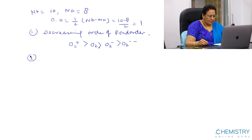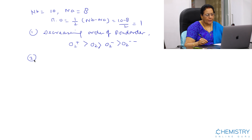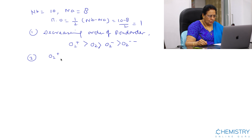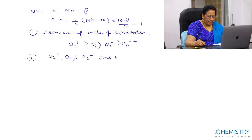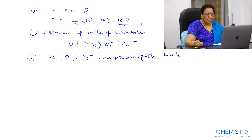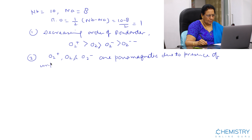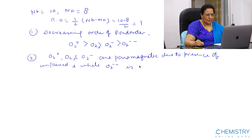The second important point is the magnetic nature of these species. If unpaired electrons are present, the nature is paramagnetic. If all electrons are paired, the nature is diamagnetic. Based on the electronic configurations, O2, O2+, and O2- are paramagnetic due to the presence of unpaired electrons, while O2(2-) is diamagnetic.